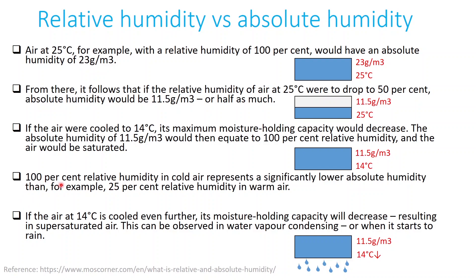Here we have another statement: 100% relative humidity in cold air represents a significantly lower absolute humidity than, for example, 25% relative humidity in warmer air. For example, 11.5 grams of water per cubic meter at 14 degrees — if the air at 14 degrees is cooled even further, its moisture holding capacity will decrease, resulting in supersaturated air. This can be observed in water vapor condensing or when it starts to rain.